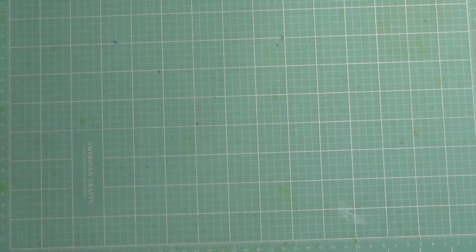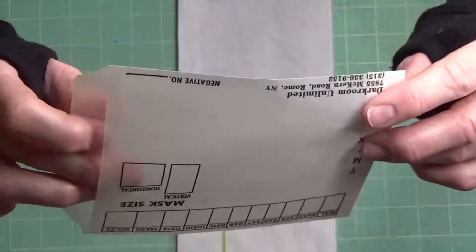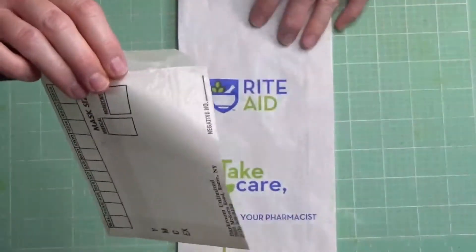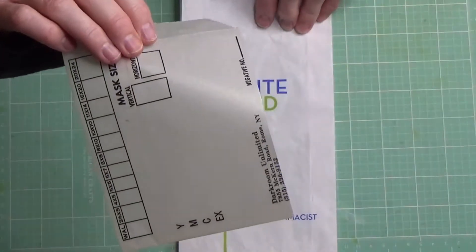The next thing that I'm going to show you is what you can do with glassine bags. So this is an example of your typical glassine bag. It's pretty translucent. And there's different ways that you can decorate that.